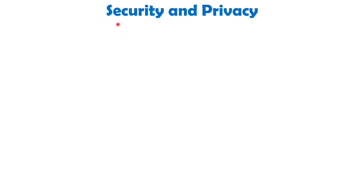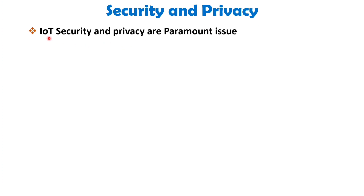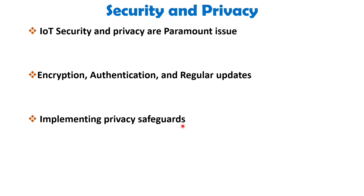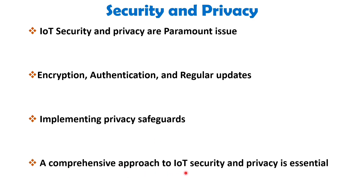The next characteristic is security and privacy. IoT security and privacy are paramount in ensuring the protection of sensitive data and mitigating risks associated with interconnected devices. Robust security measures such as encryption, authentication and regular updates are necessary to safeguard IoT systems against unauthorized access and cyber threats. Additionally, implementing privacy safeguards such as transparent consent mechanisms and adherence to privacy regulations is crucial to protect individuals' personal information collected by IoT devices.